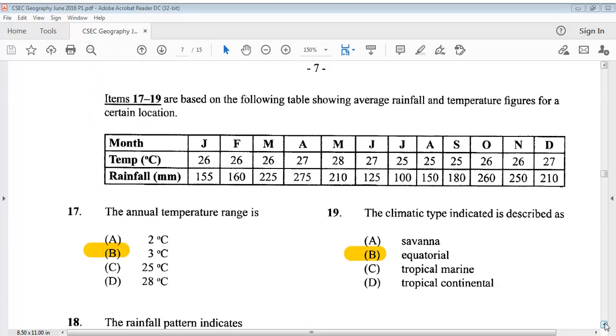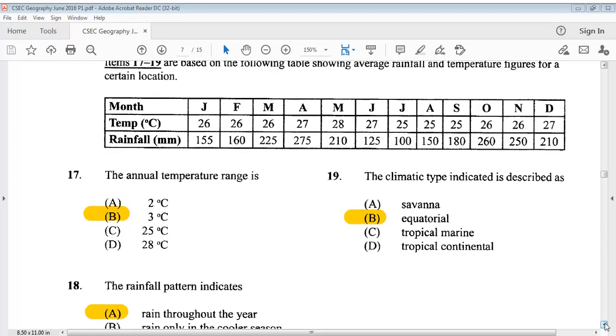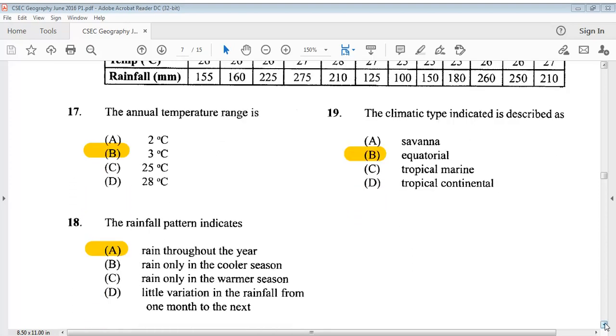Questions 17 to 19 are based on the following table, showing average rainfall and temperature figures for a certain location. You can take a look at your table. Question 17 says, the annual temperature range is? The answer is B, 3 degrees Celsius. Question 18, the rainfall pattern indicates? The answer is A, rain throughout the year. Question 19, the climatic type indicated is described as? The answer is B, equatorial.